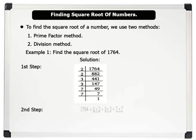Next, we express the number as a product of its prime factors and group them in pairs. Now, to get the square root of 1764, we pick out one number each from the pairs of prime factors and multiply them together.